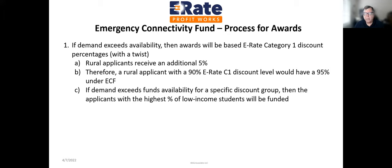The process for awards: if demand exceeds availability, awards will be based on E-Rate category one discount percentages with a twist. If you're at a 95% or 90% discount on category one, rural applicants get an additional 5% discount, putting them at 95% — so 5% payment and 95% paid by ECF. If demand exceeds funds for a specific discount group, applicants with the highest percentage of low-income students will be funded first. For 50% discount districts, I would say apply, but be prepared for disappointment.